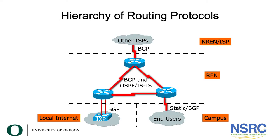The diagram on the screen covers all the routing protocols discussed previously. There are three separate networks: at the campus level, the RAN level, and at the NRAN or ISP level. At the campus level, which is also your local internet, you would typically connect with your RAN using static or EBGP. Within the RAN level, you would typically use your IGP — which is OSPF or IS-IS — or IBGP. When connecting from the RAN level to the ISP or NRAN level, you would typically use EBGP.